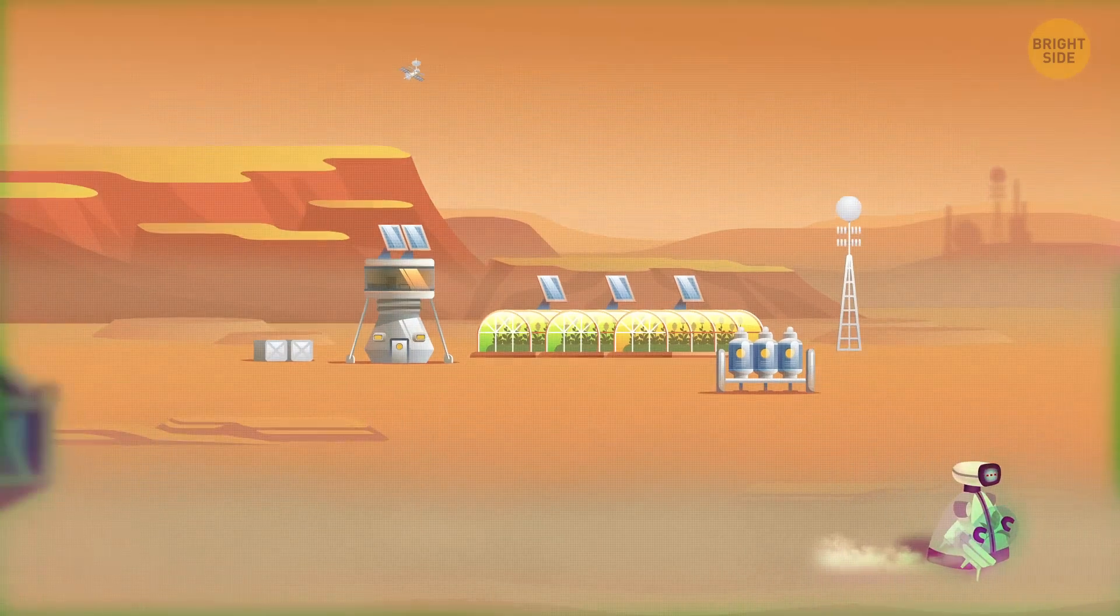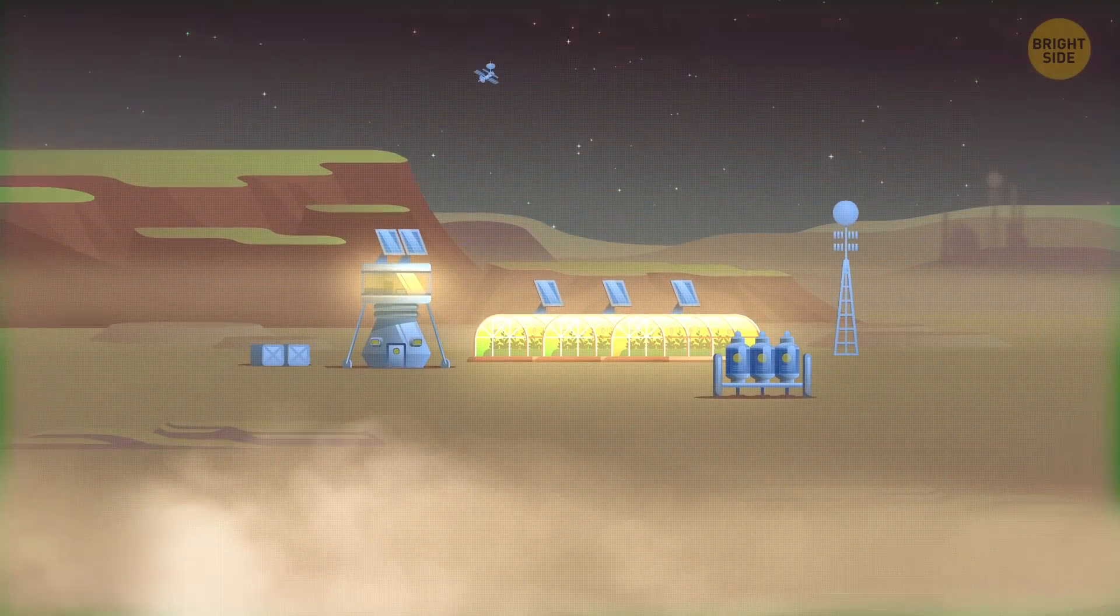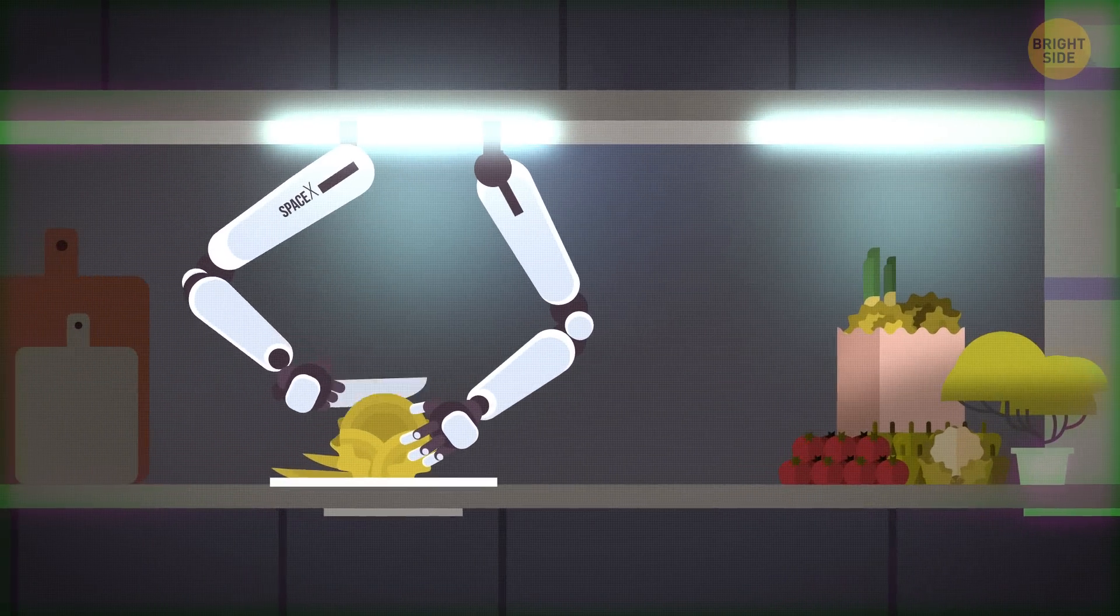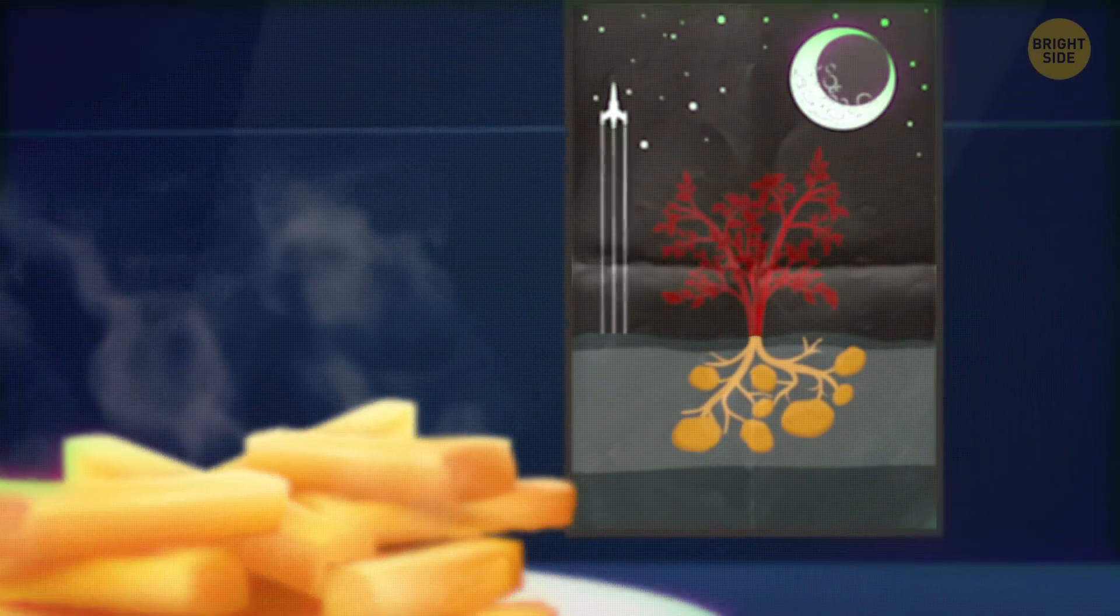Your job today is to monitor the instruments in the freshwater extraction plant. In the evening, your shift ends and you return home. The cooking robot has already prepared dinner. Fried potatoes, grown right here on Mars.